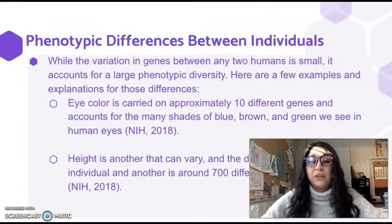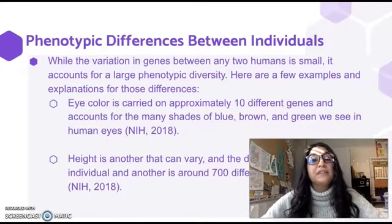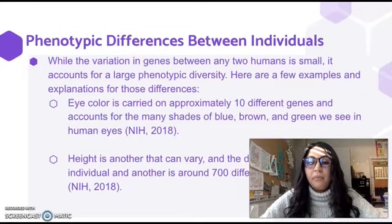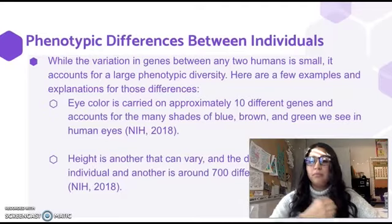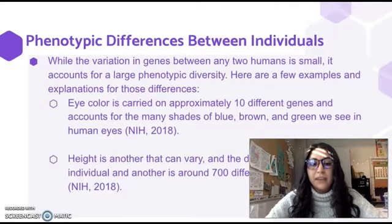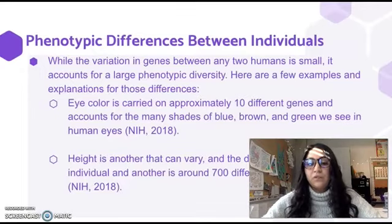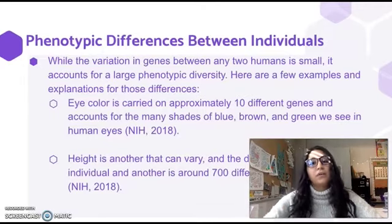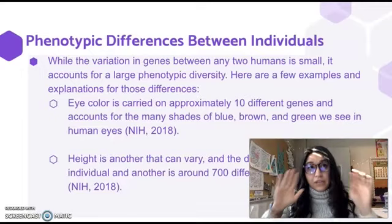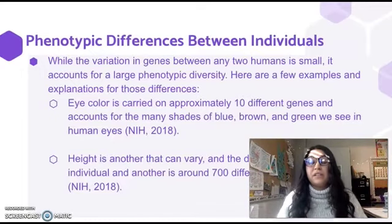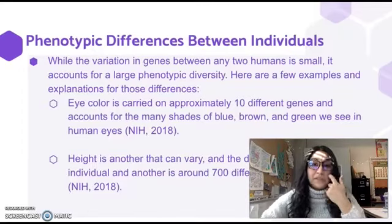While the variation in genes between two humans is very small, here are some examples that explain those differences. Eye color is one — approximately 10 different genes account for the different shades of blue, brown, and green. Height is another — the difference between individuals involves around 700 different genetic variations. Out of 3 billion nucleotides, these are not very many genes, yet they account for such discrepancies between people.